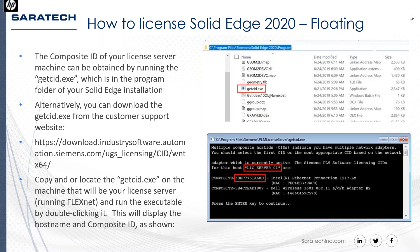Once you run the Get CID tool, you'll see a command prompt window showing your host name — for example, 'lic-server-01' — and the Composite host ID. On machines with two network adapters, you'll see two entries: the first is the LAN/Ethernet adapter, the second is for Wi-Fi. Both should work, but we typically recommend using the first Ethernet one since it will typically always be turned on.